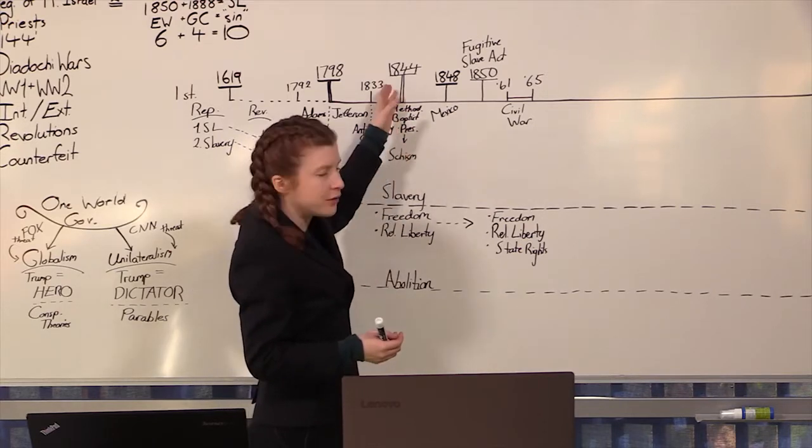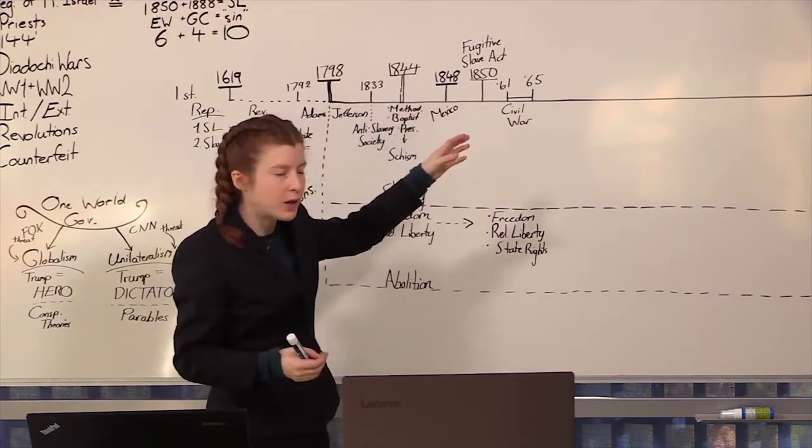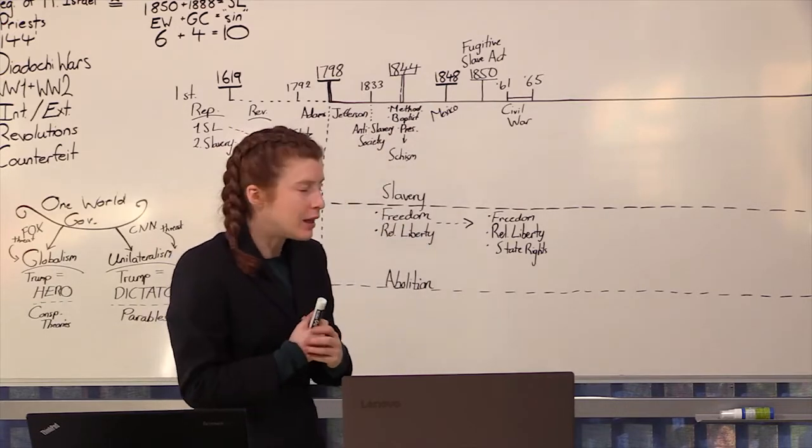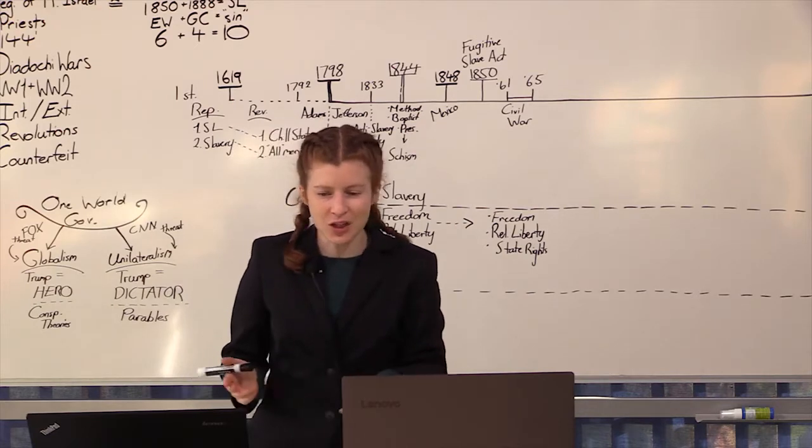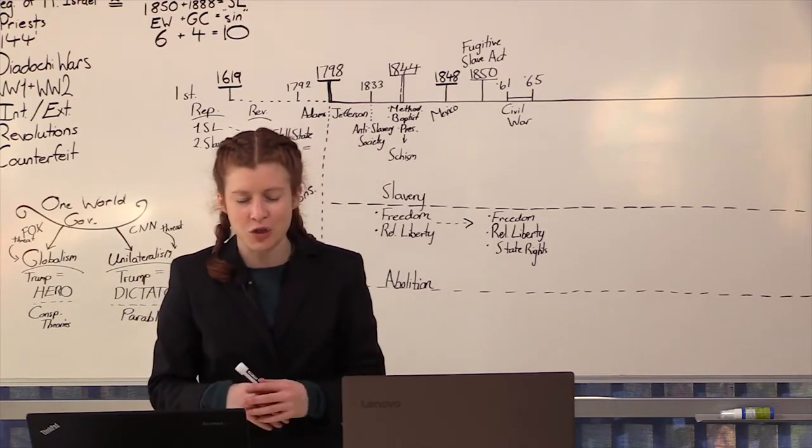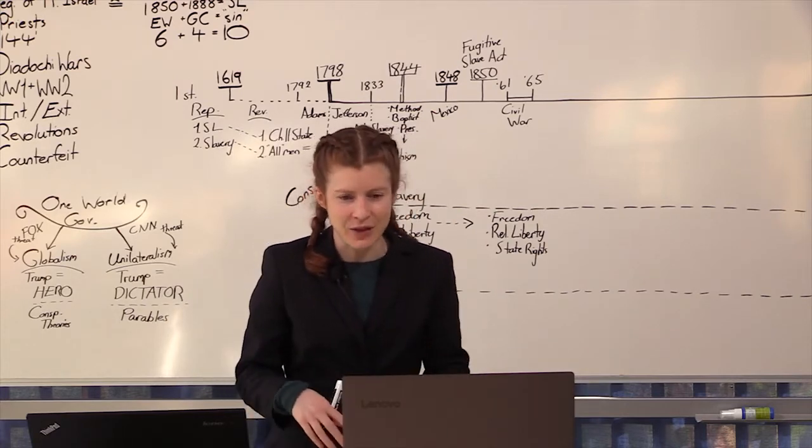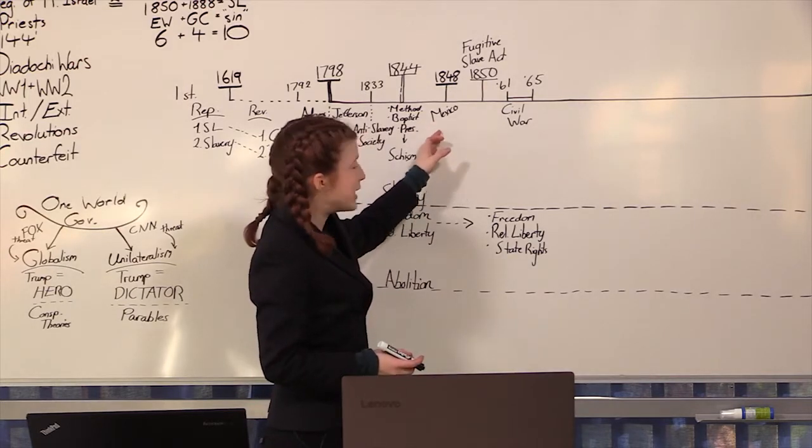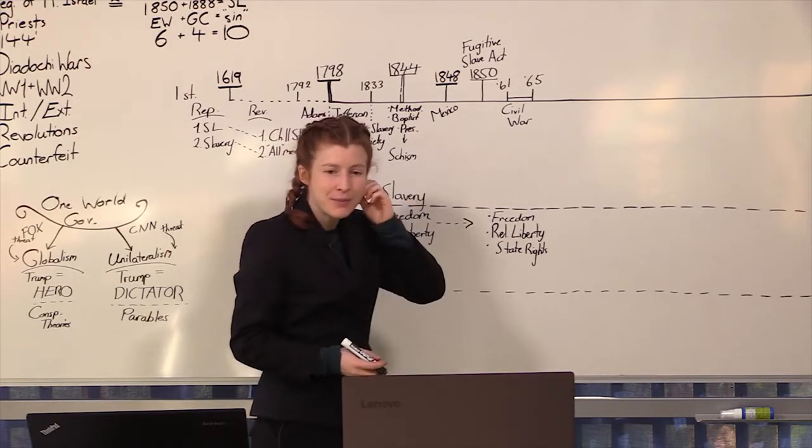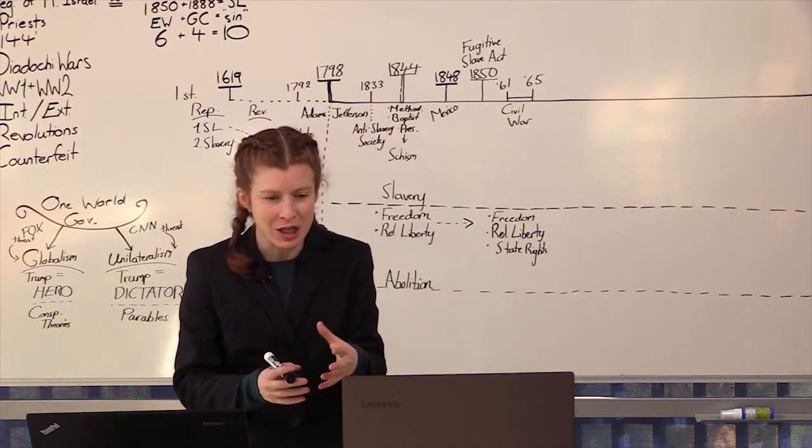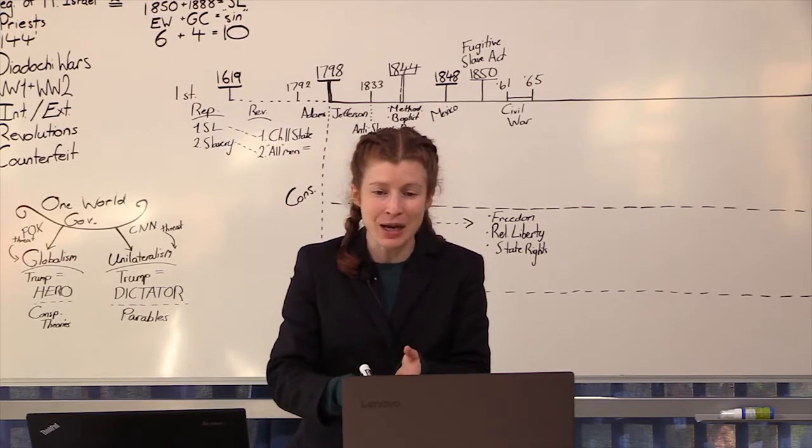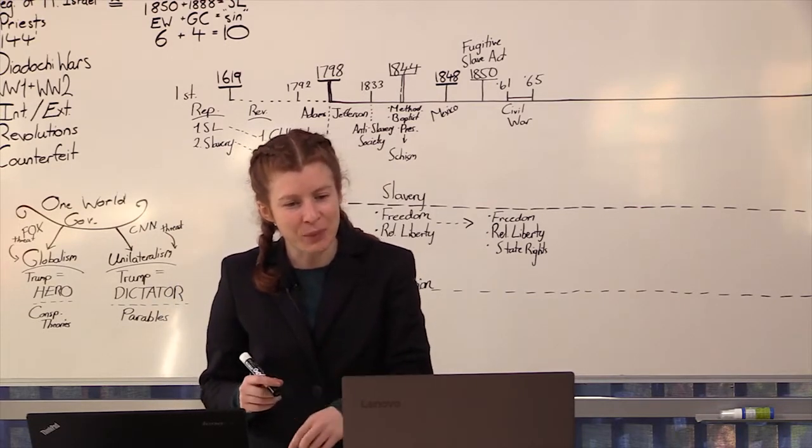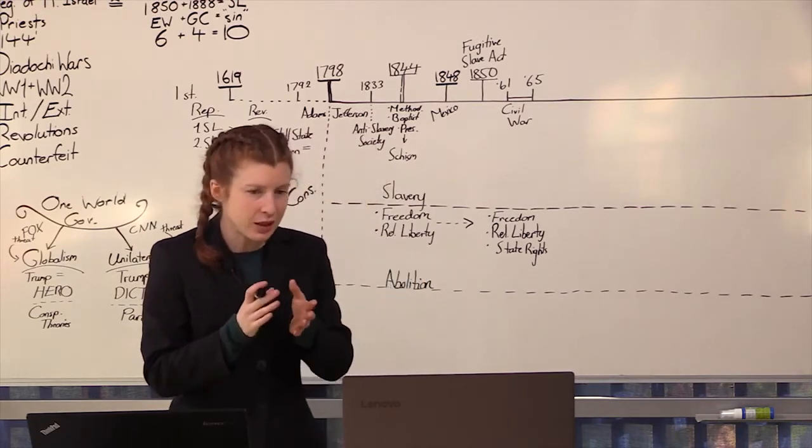We looked at the issue of Texas that was a subject of the 1844 election. In 1848, we looked at Calhoun from South Carolina where he said we don't even want Mexico because they're too mixed blood, too many American Indians, not pure enough. Through that argument, he was saying that will prevent us from doing our work as a nation, which is to spread freedom and religious liberty throughout the world.